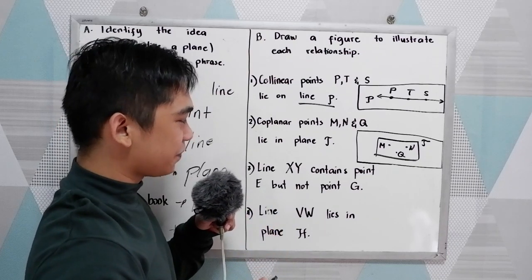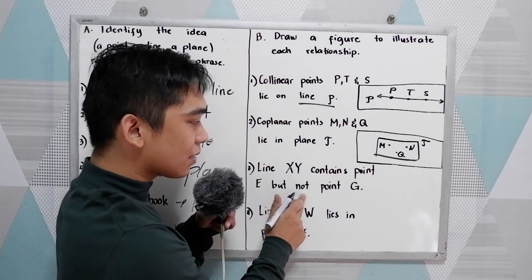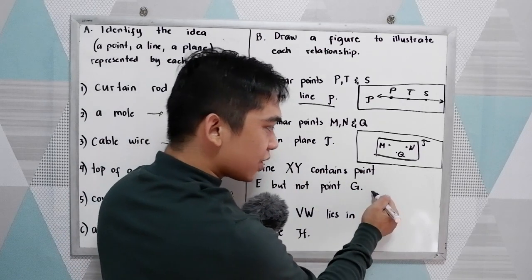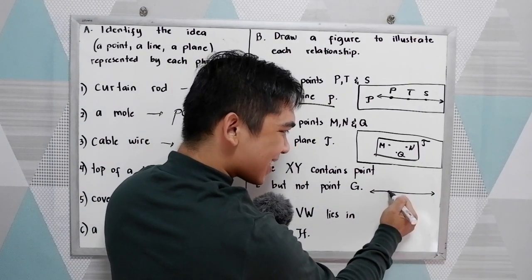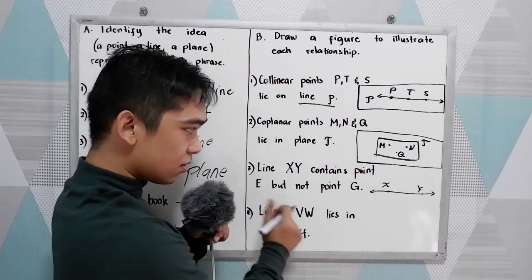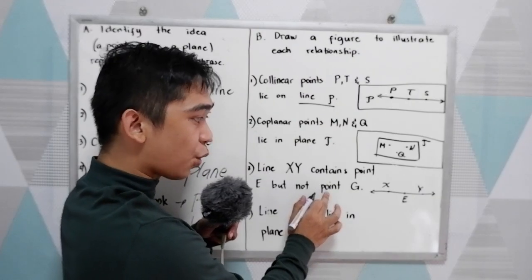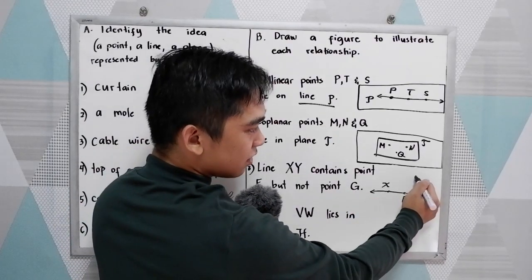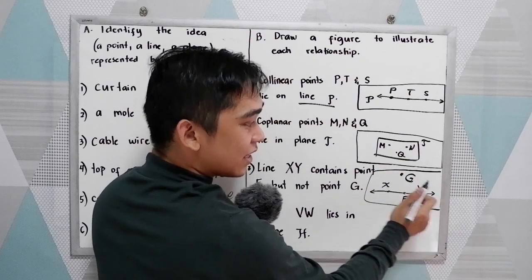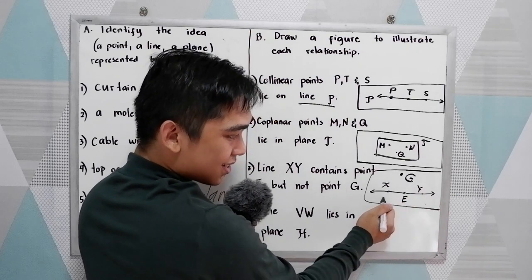Next, number three. Line XY contains point E but not point G. So we have a line XY. So we need to draw the line. Let's say this is our X and Y. And the line contains point E. So let's say we have point E here, but not point G. So G will be in this part, or you can write G in this one or in this area.